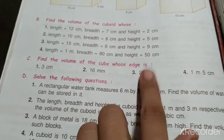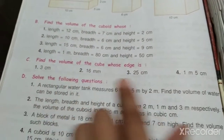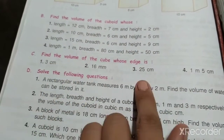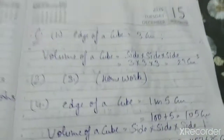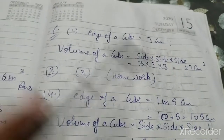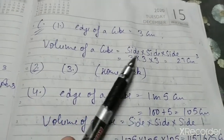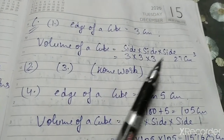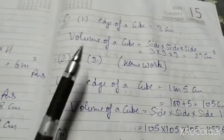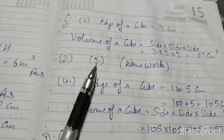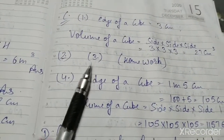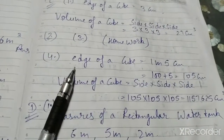Part C: find the volume of the cube whose edges are given. Each edge given means one side is given — simple, just like before. Edge of a cube is 3 cm. Volume of a cube = side × side × side. So 3 × 3 × 3 = 27 cm³. Questions 2 and 3 are the same — you will do them yourself.